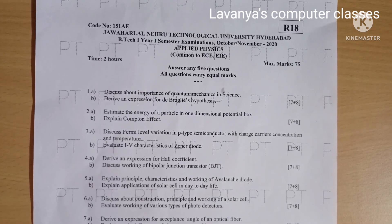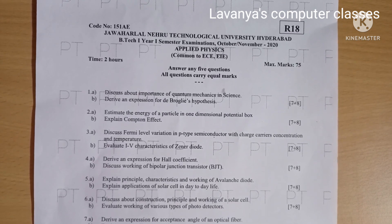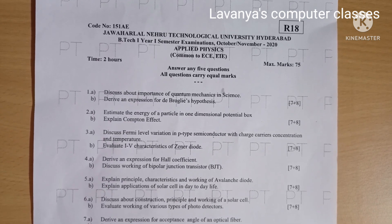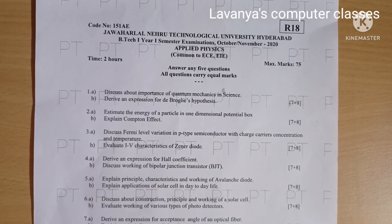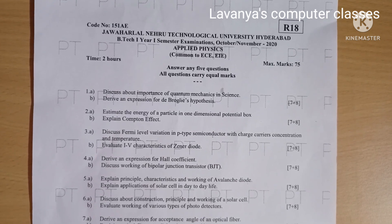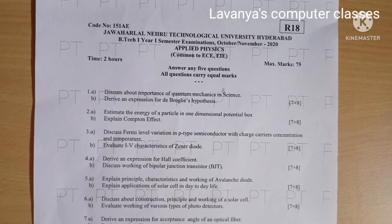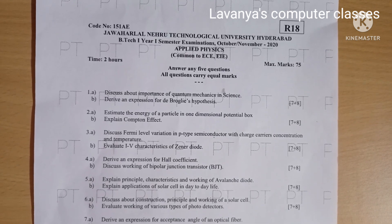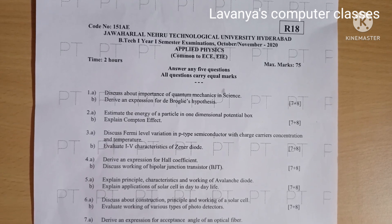Question 2a: Estimate the energy of a particle in a one-dimensional potential box. Question 2b: Explain the Compton effect, for 7 and 8 marks respectively. Question 3a: Discuss Fermi level variation in a p-type semiconductor with charge carrier concentration and temperature, for 7 marks.